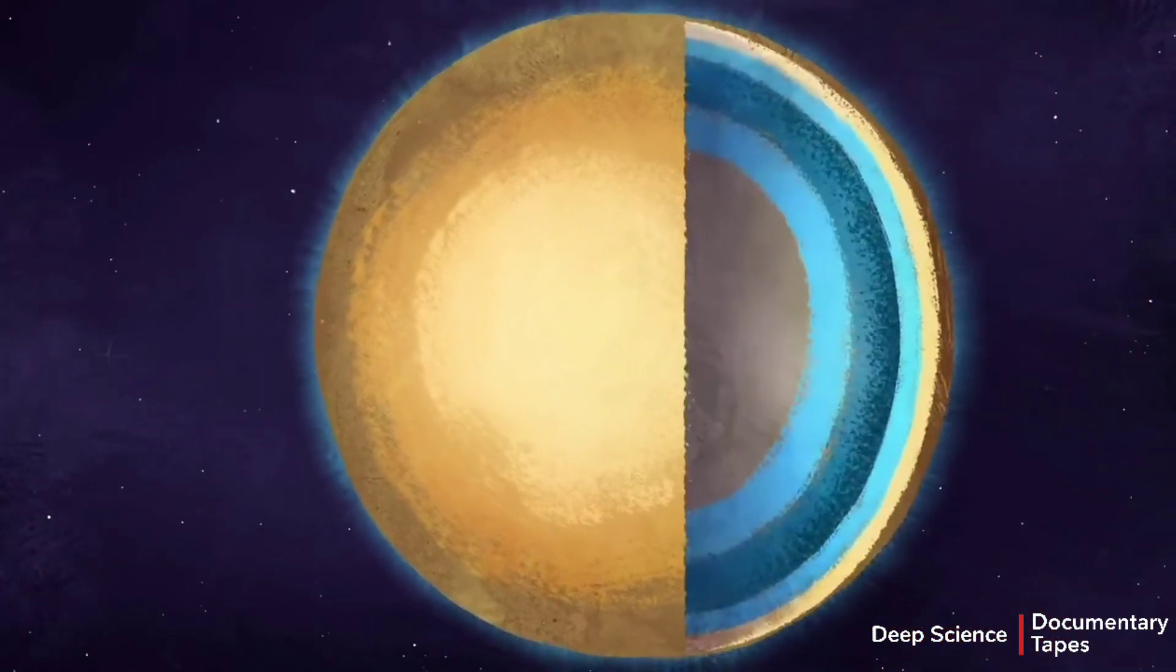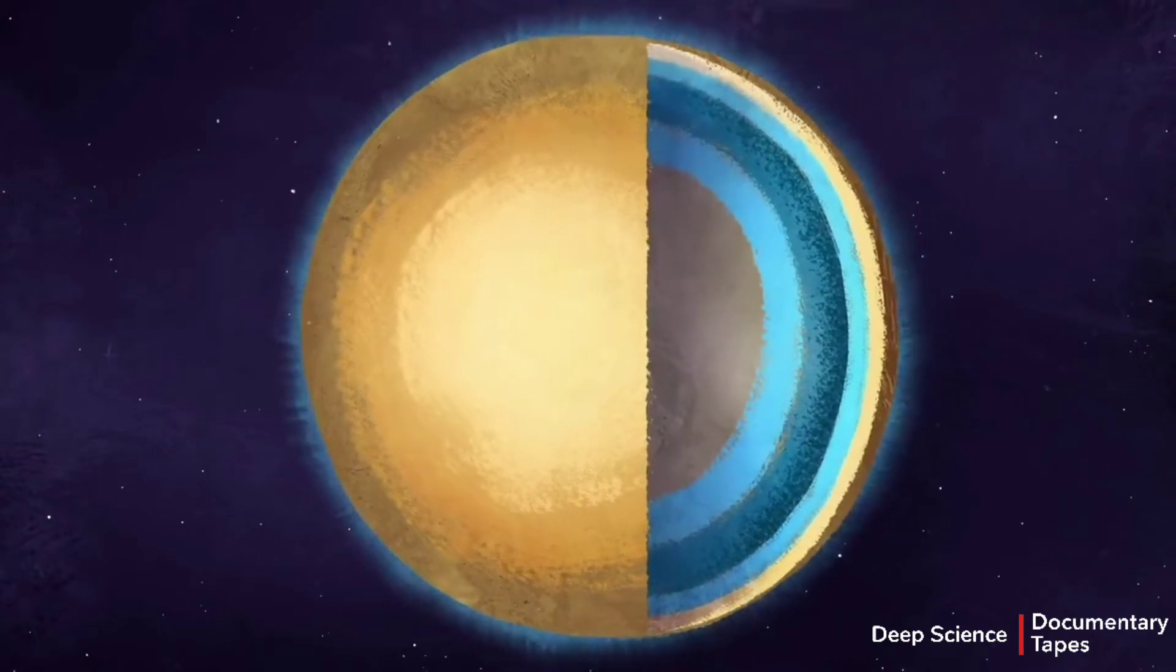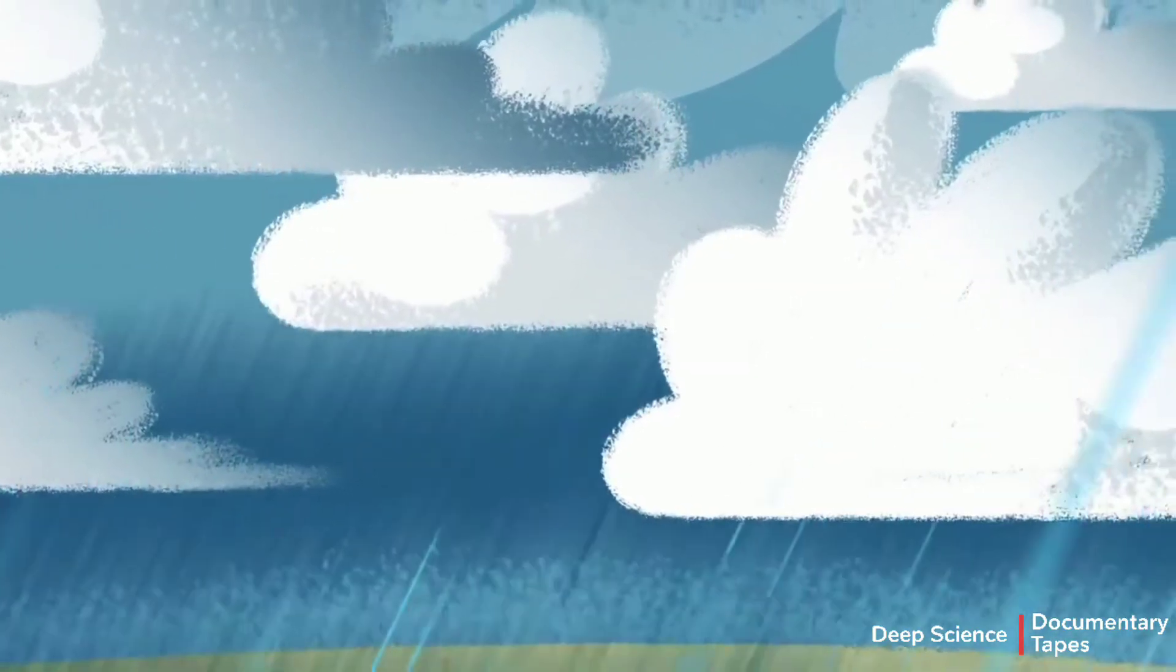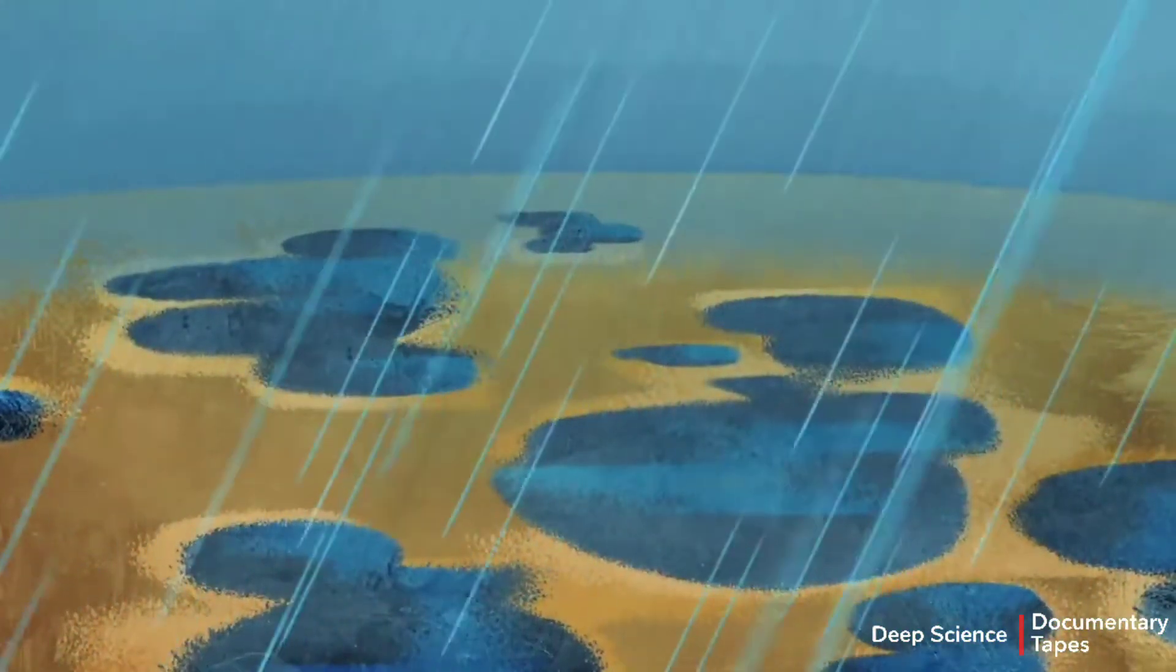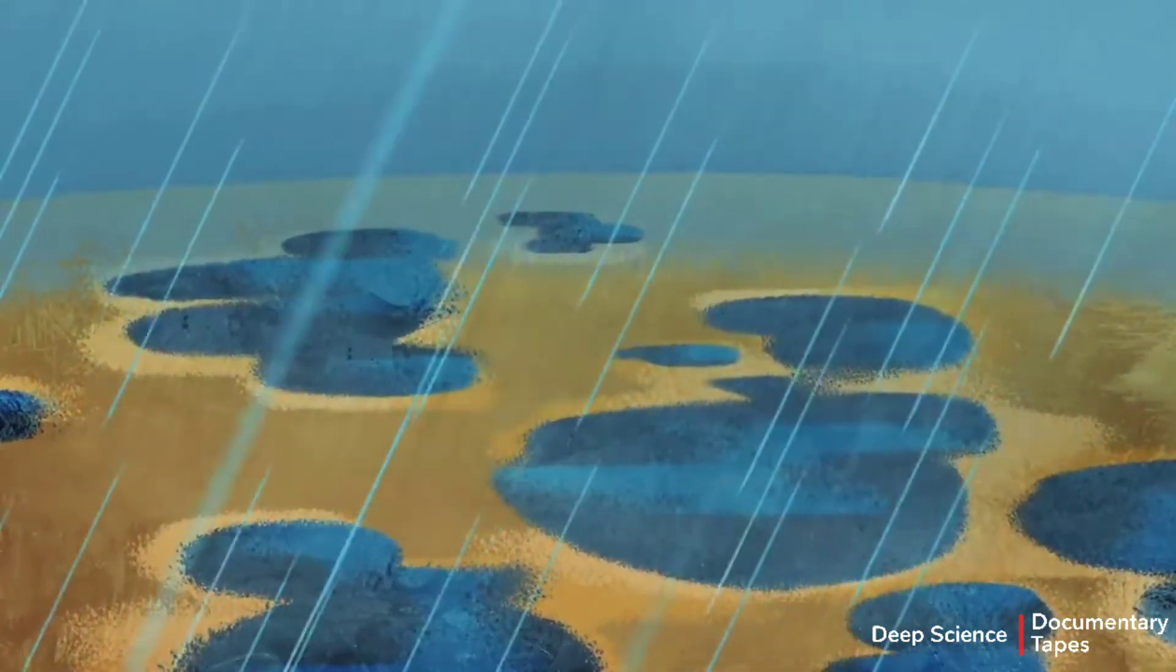Titan has a thick nitrogen atmosphere containing methane and many other organic molecules. Its clouds condense and rain onto Titan's surface, sustaining lakes and seas full of liquid methane.